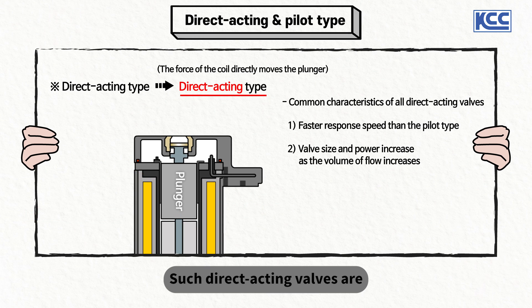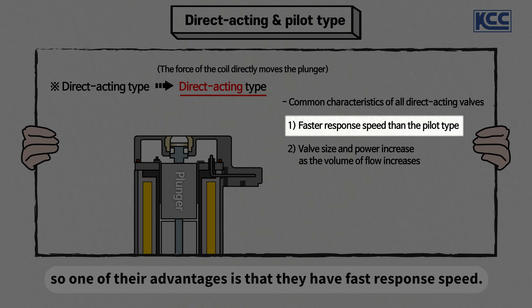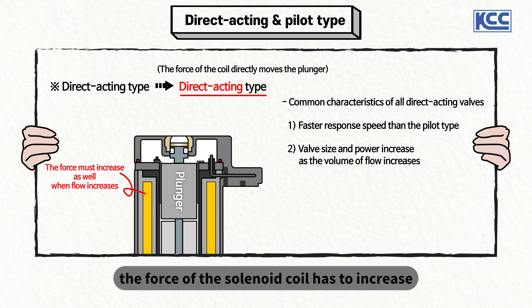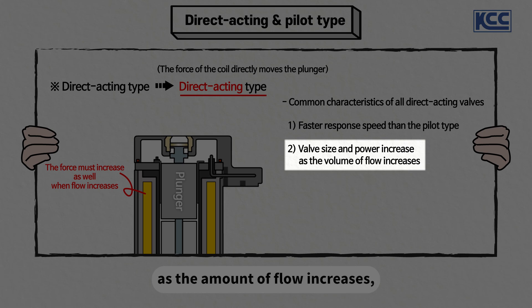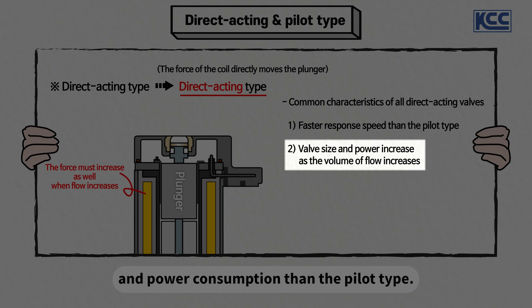Direct acting valves are operated directly by the force of solenoid coils, so one of their advantages is fast response speed. Since this type of valve is operated only by the force of a solenoid coil, the force of the coil has to increase as the amount of flow increases. This may require a relatively larger size of valve and higher power consumption than the pilot type.